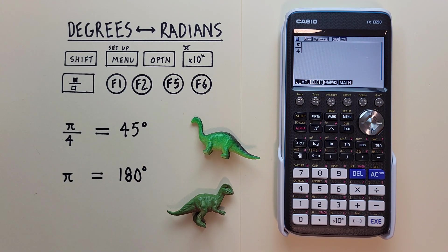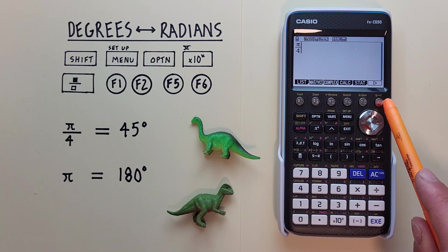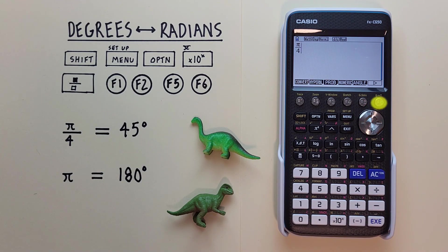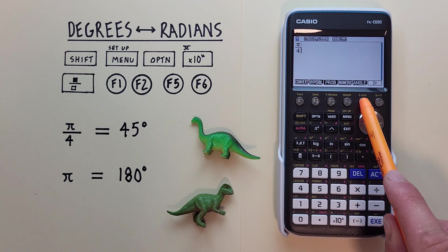Now we need to tell our calculator these are radians. So to do that, we hit the Option key so that we see this menu here. And then F6 to go to the next menu. So that we see Angle over F5. We select that.